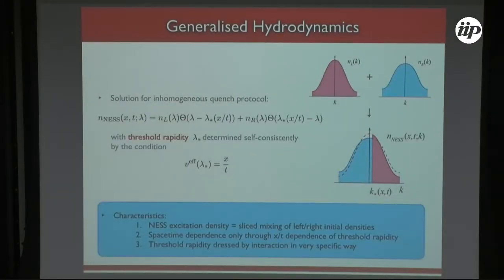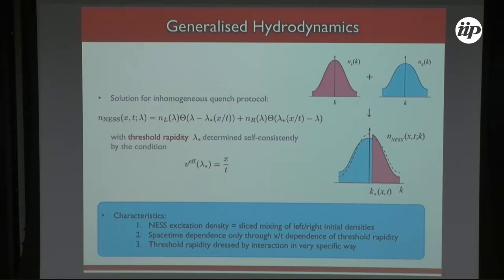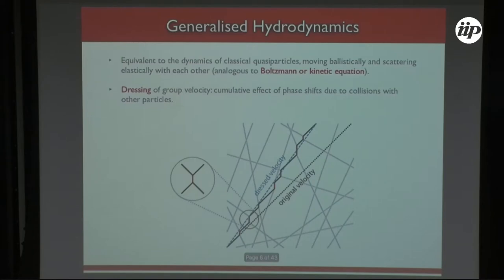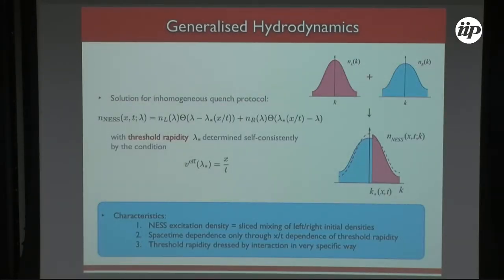The three characteristics of the GHD solution for the partitioning protocol are: the NESS corresponds to mixing left and right initial densities cut at a threshold value; the space-time dependence enters only through the ratio x over t; and the threshold rapidity itself acquires a non-trivial dressing through the effective velocity equation.